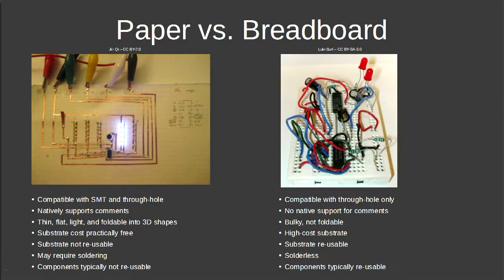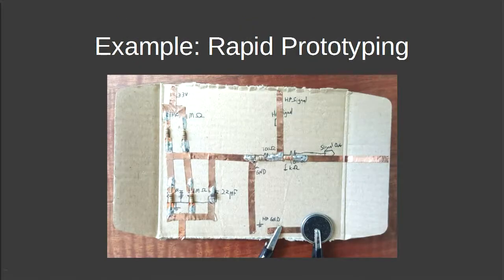Comparing paper to breadboard: paper electronics is compatible with both surface mount and through-hole components, natively supports comments since you can write on it, is thin, flat, light, and can be folded into 3D shapes. The substrate is essentially free. A breadboard can only use through-hole components without adapters, has no native support for comments, is bulky, and can't be folded — but the substrate is reusable and solderless, which drives its use in education.